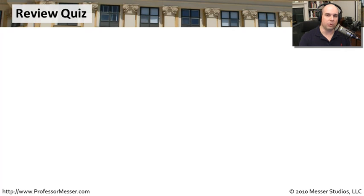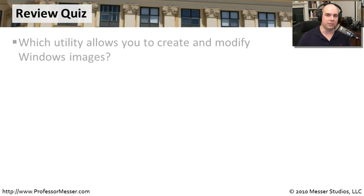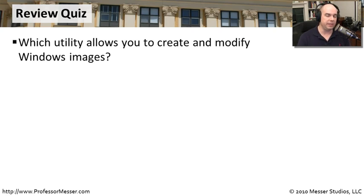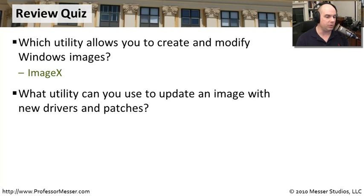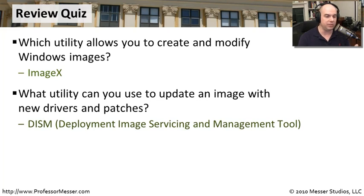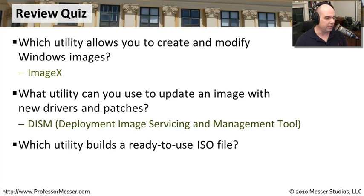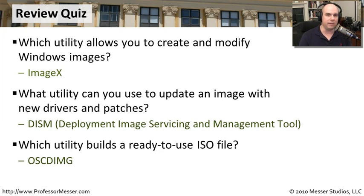That covers the framework needed for deploying Windows 7. Now let's review. Which utility allows you to create and modify Windows images? That's ImageX — it builds our Windows images and allows us to make changes to those images as well. What utility can you use to update an image with new drivers and patches? That's DISM, the Deployment Image Servicing and Management Tool. Which utility builds a ready-to-use ISO file? That would be OSCDIMG, especially useful when building a Windows PE ISO file.